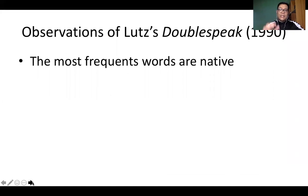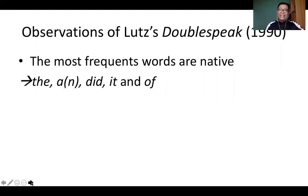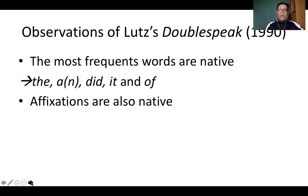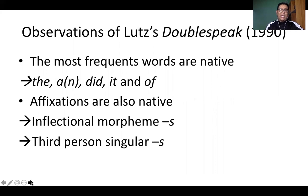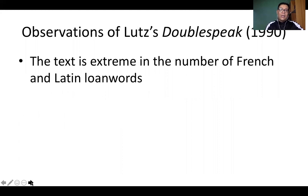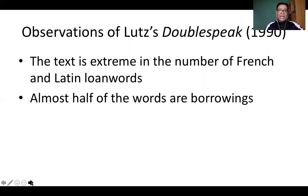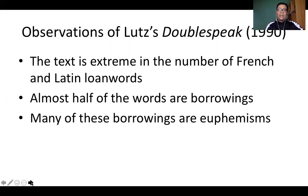Here are Lutz's observations: the most frequent words are native — including determiners the, a, and an; auxiliary did; pronoun it; and preposition of. Affixations are also native, including inflectional morphemes for plural and third person singular. The text is also extreme in the number of French and Latin loan words — almost half of the words are borrowings from French, Latin, and other languages. Many of these borrowings are euphemisms, meaning statements used to conceal a negative message.